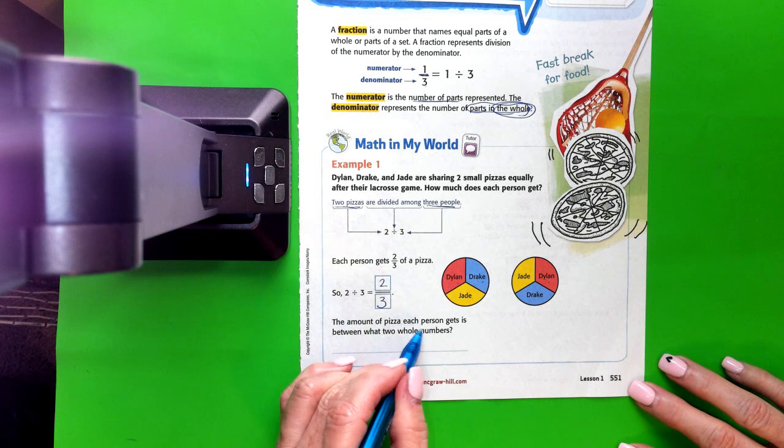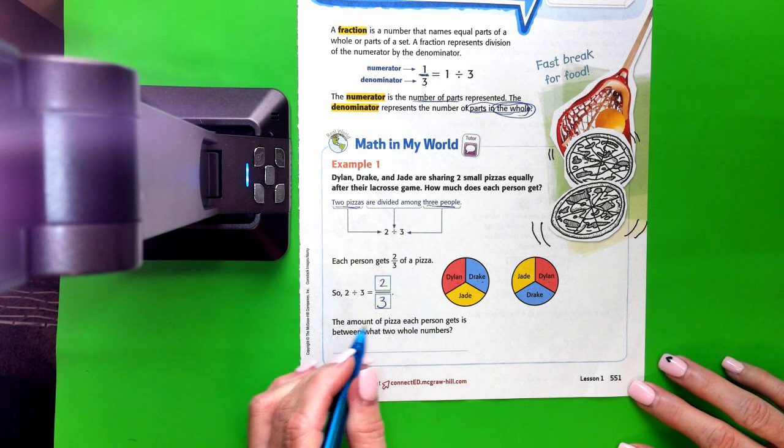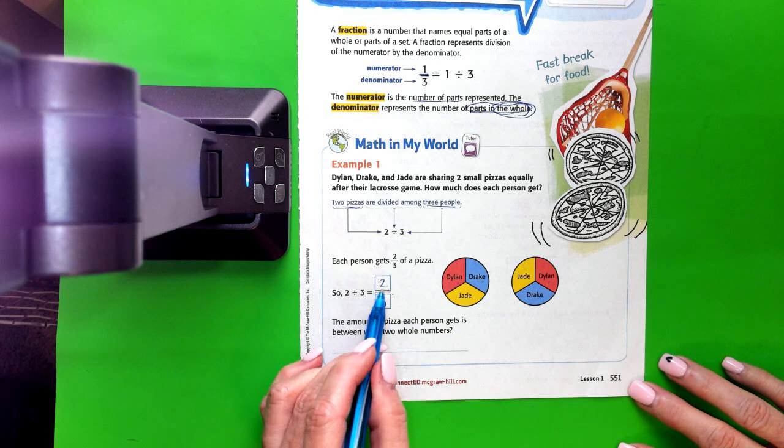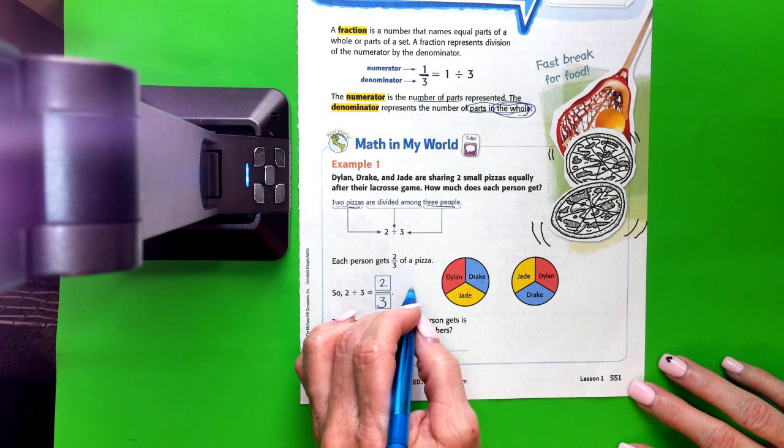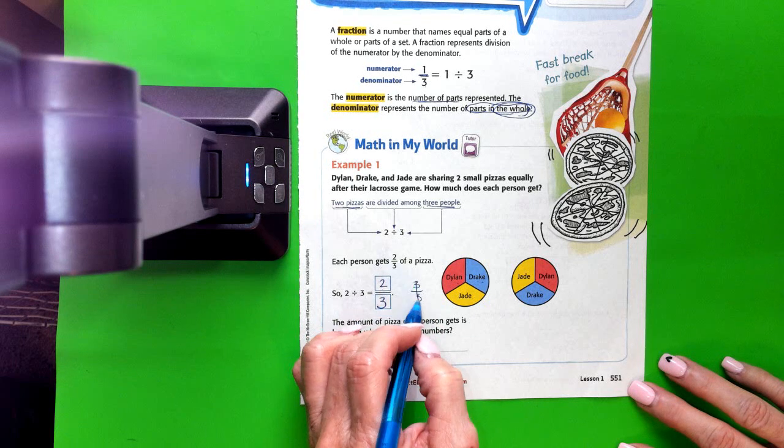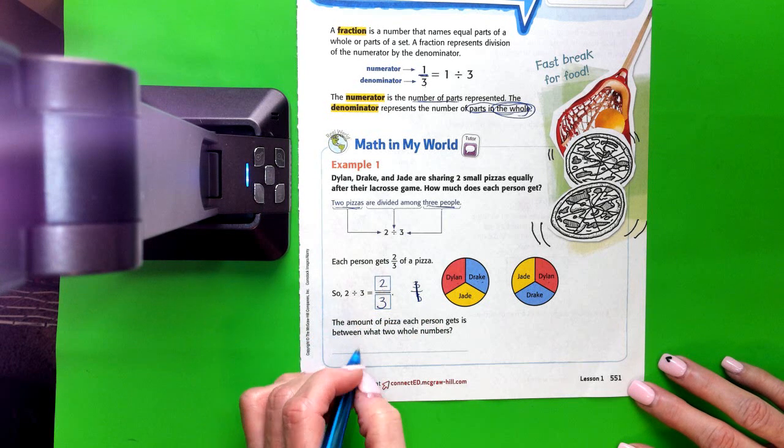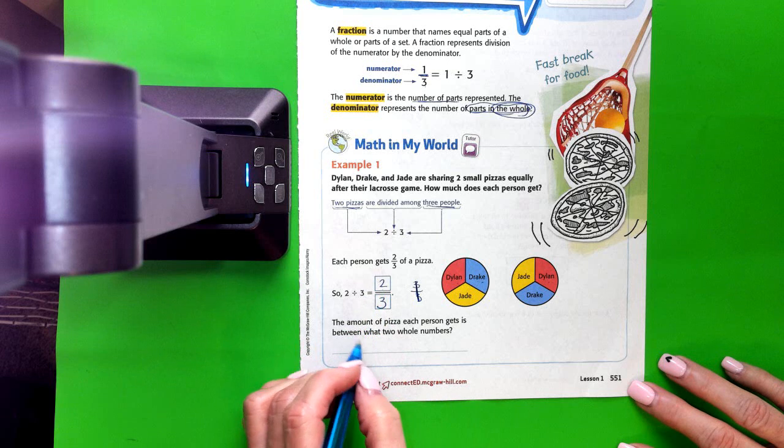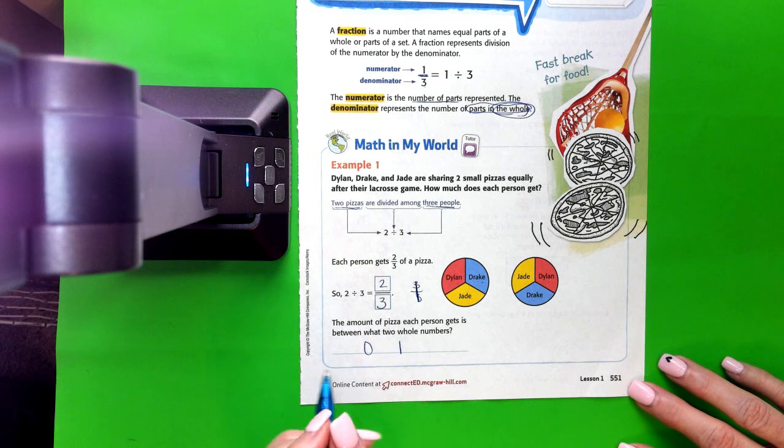The amount of pizza each person gets is between what two whole numbers? Well, we know that for a fraction to be a whole number, it would have to be 3 over 3, right? That would be our whole 1. So this amount, 2 thirds, is between 0 and 1.